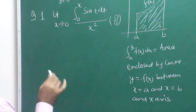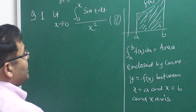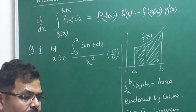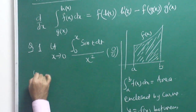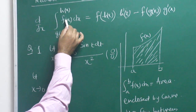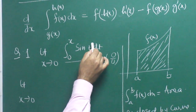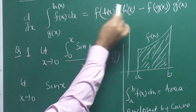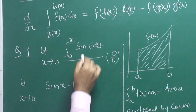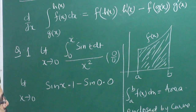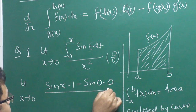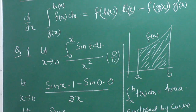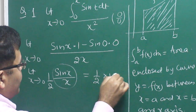So the numerator is 0 and the denominator is also 0 when x = 0, making it a 0/0 form. We can apply L'Hôpital's rule, but to apply it, we need to differentiate this function. To differentiate this function, we need to know Newton-Leibniz rule. Now, how do we differentiate this? First, put the upper limit in place of t: that gives sin(x). Then multiply by the derivative of x, which is 1.